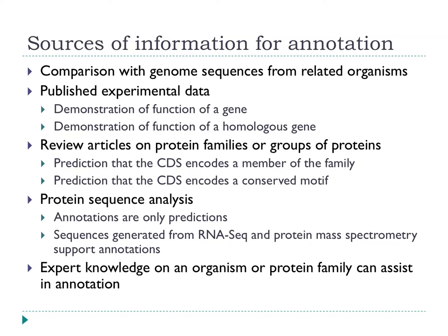Coming back to annotation — what kind of information can we use to annotate genomes? The easiest quick-and-dirty approach is to take the nearest organism for which there is a complete annotated genome and plagiarise the annotation from that organism. We actually do this quite a lot. You can do it in an hour or two and get an automated annotation of a genome if there's a closely related organism available.